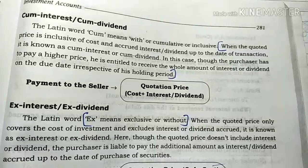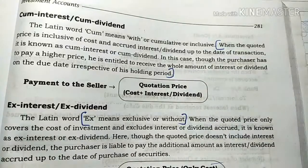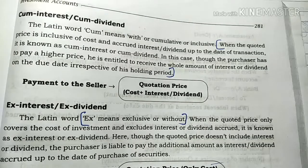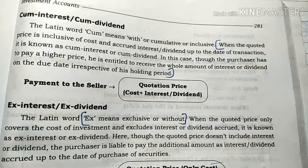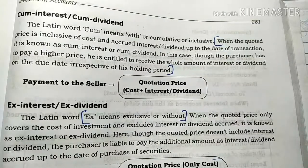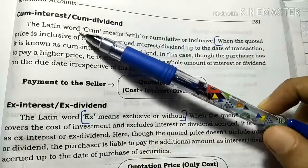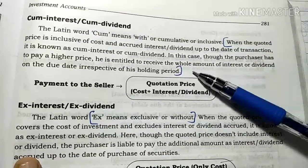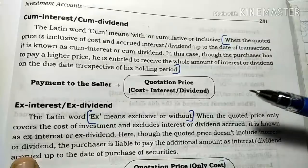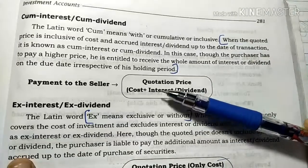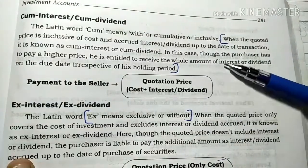We have a normal problem in our investment account. What is the interest date? The date of payment of interest. What is the interest date of interest payment? We have two terms: cumulative or inclusive. We have a lot of debt on our investment account. The interest rate changes and we are wise to see interest in the cost. That is why we have a lot of interest.